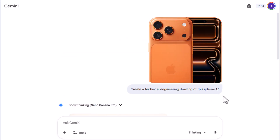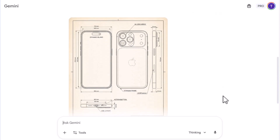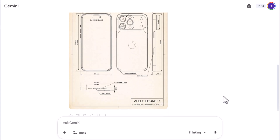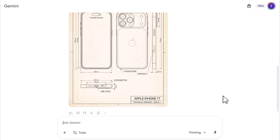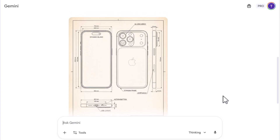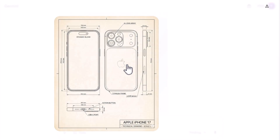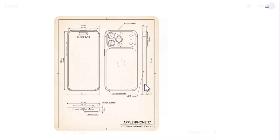And here we go. We have the technical drawing of this iPhone 17 that nicely shows the design — front, back, and the side. It also includes the size and all the other technical notes, especially the dimensions and how the logo is situated on the back of the iPhone.